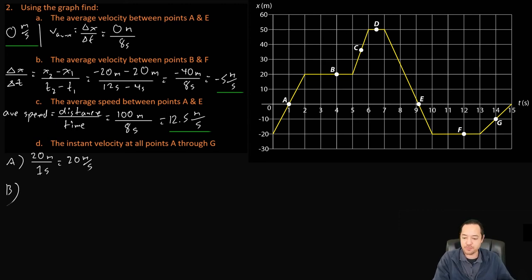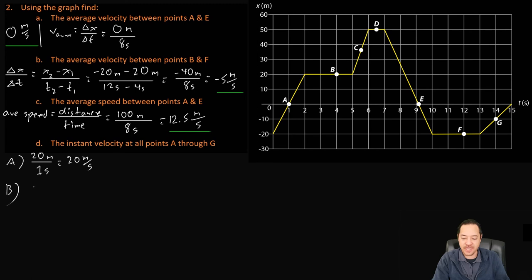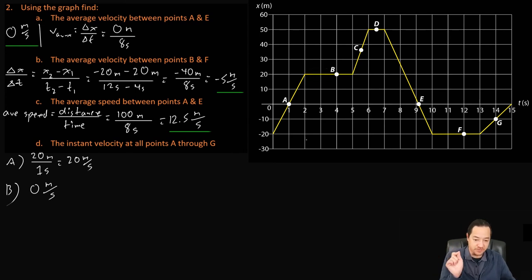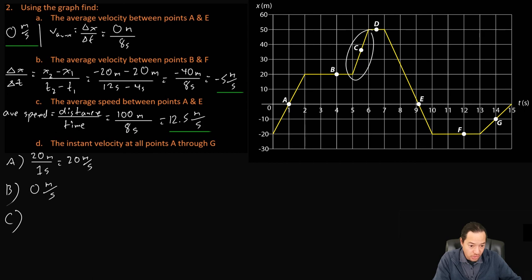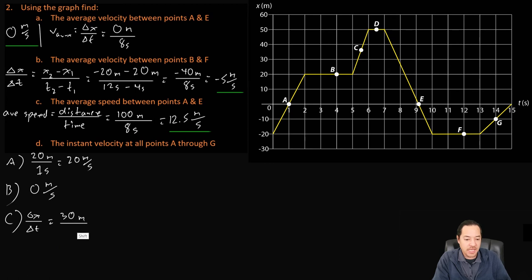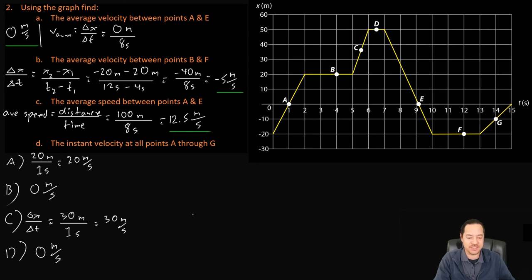At point B, the slope is zero — so instantaneous velocity is zero meters per second, because the position stays the same while time moves forward. At point C, delta X is 30 meters over one second, giving 30 meters per second. At point D, just like B, the graph is horizontal, so instantaneous velocity is zero meters per second.